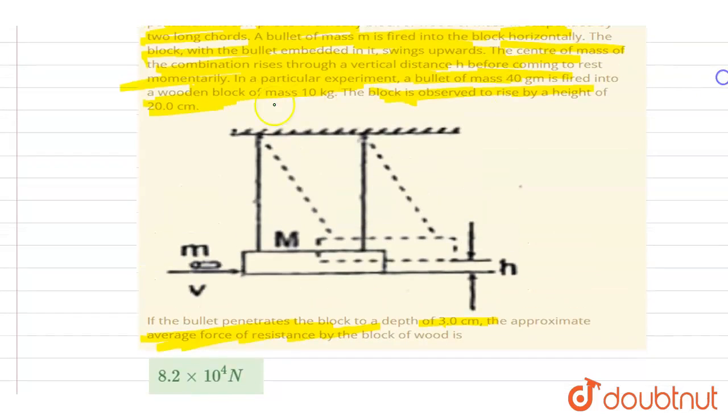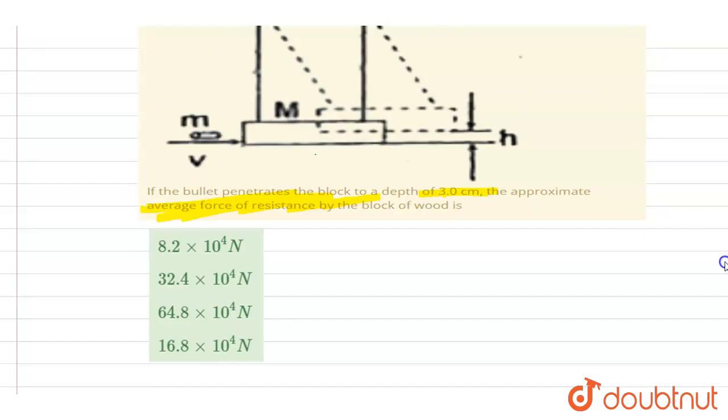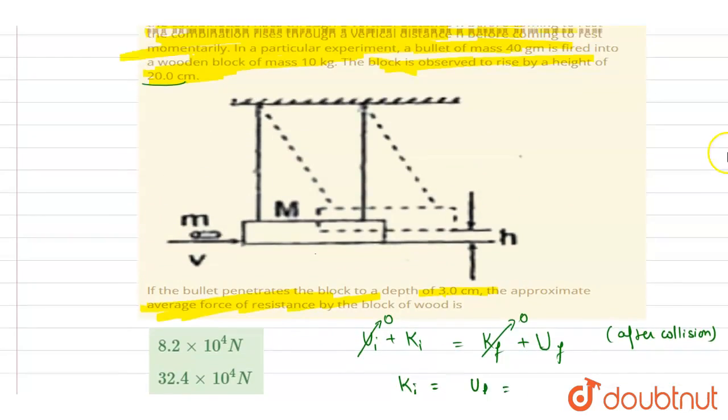If you see, it rises by this much height, so you can get the kinetic energy here. I will write down initial potential plus kinetic at this position after the collision equals final potential after collision. From mechanical energy conservation, here it is 0 and finally this is 0. So half M plus m v squared.